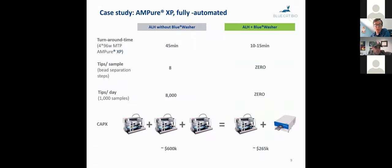There's also a fully automated version of the very same workflow. So here I'm looking at the comparison would be a Beckman Biomek machine. If you run a batch of four 96-well MTP plates on Ampure XP, that takes about 45 minutes on a Biomek. If you pair up a Biomek with a blue washer, then that goes down to 10 to 15 minutes. And of course you eliminate the tips. And in a high-throughput lab, if you process 1,000 samples a day, that's a very significant number.